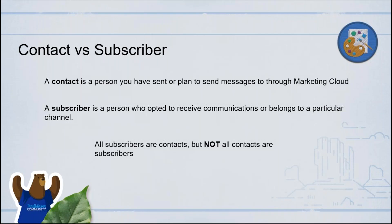In Marketing Cloud, your data model revolves around your customer or the contact. A contact is a person that you would be sending marketing communications to. Now, you may come across the term subscriber. A subscriber is someone who has opted in to receive your communication through a particular channel, like either email, SMS, or mobile push. So basically, you can have people's information stored in Marketing Cloud for the intent of marketing to them — that is a contact. A subscriber is actually a contact who has opted in to receive communication through a specific channel.